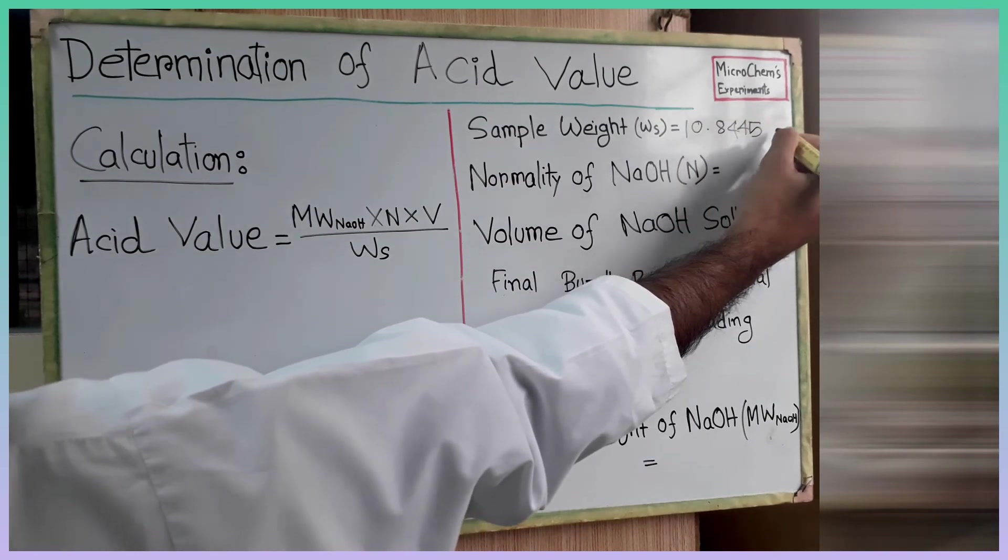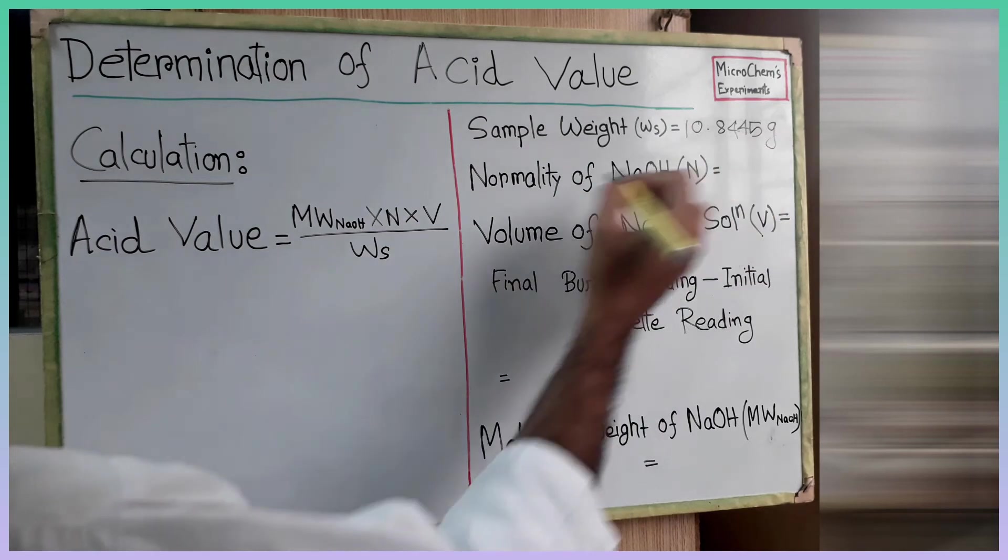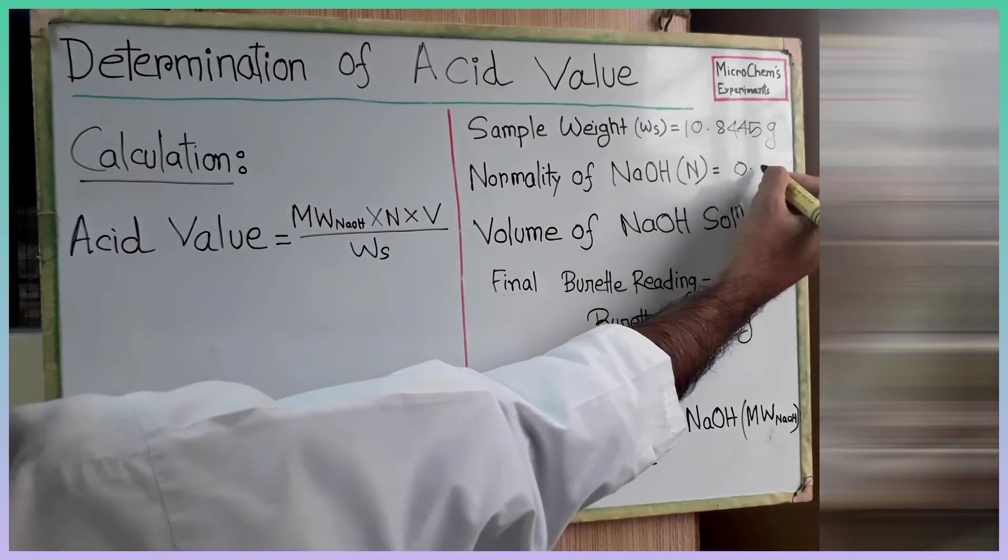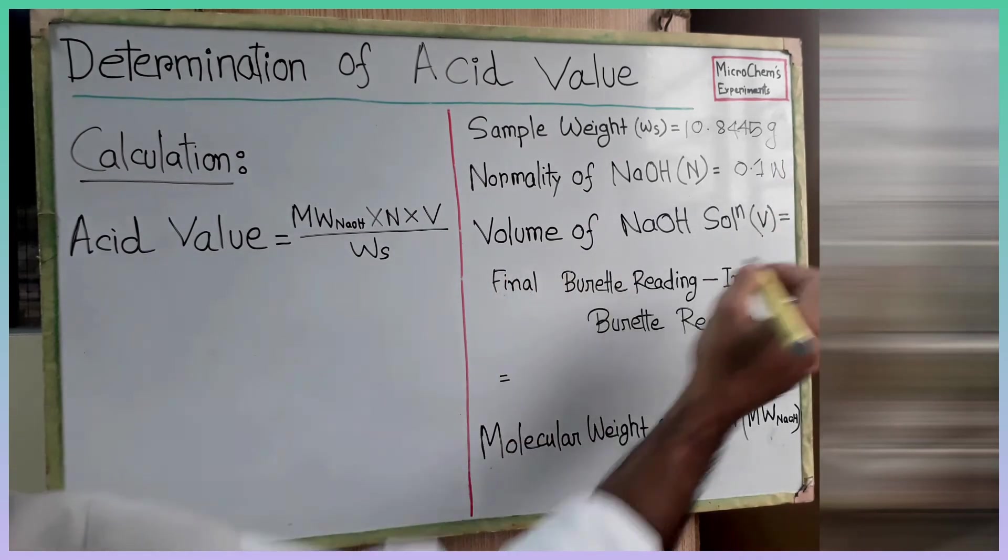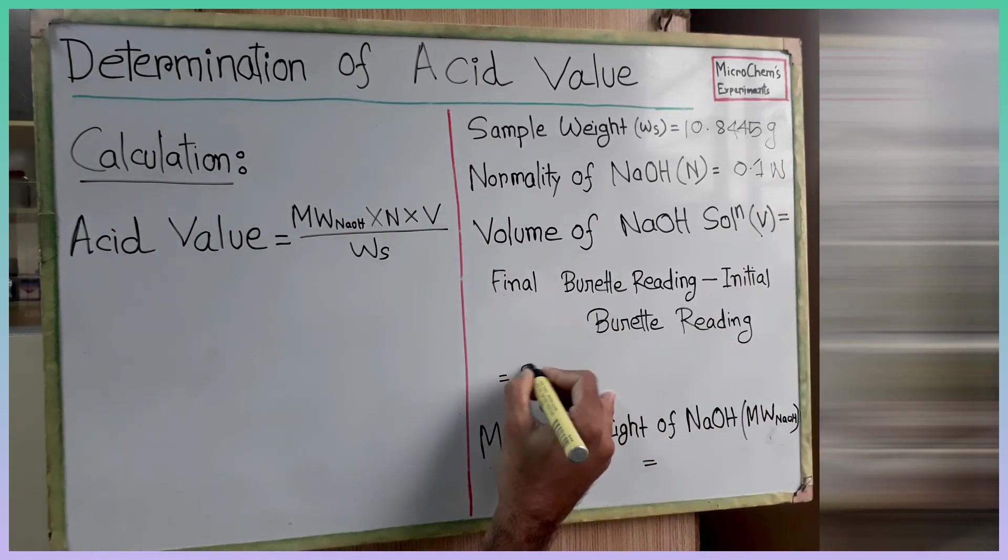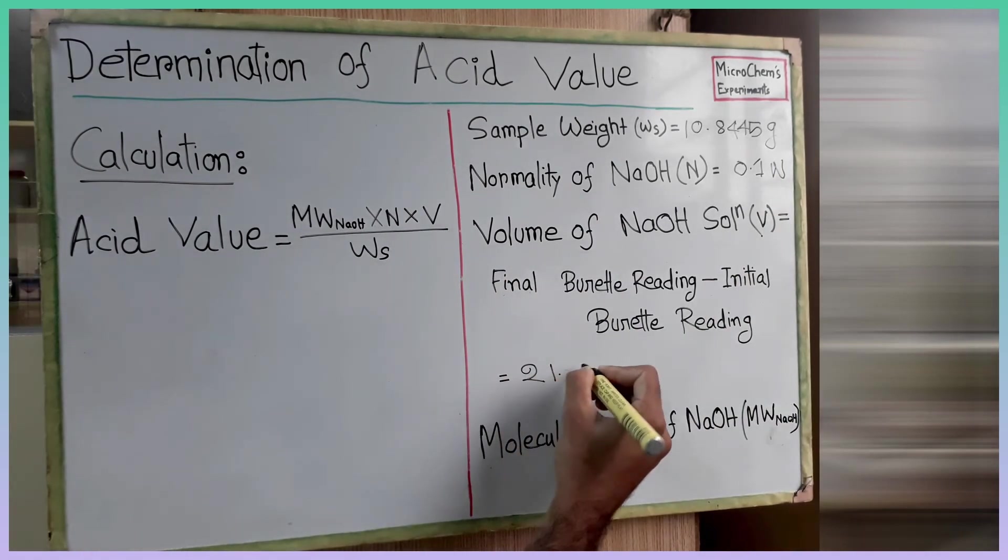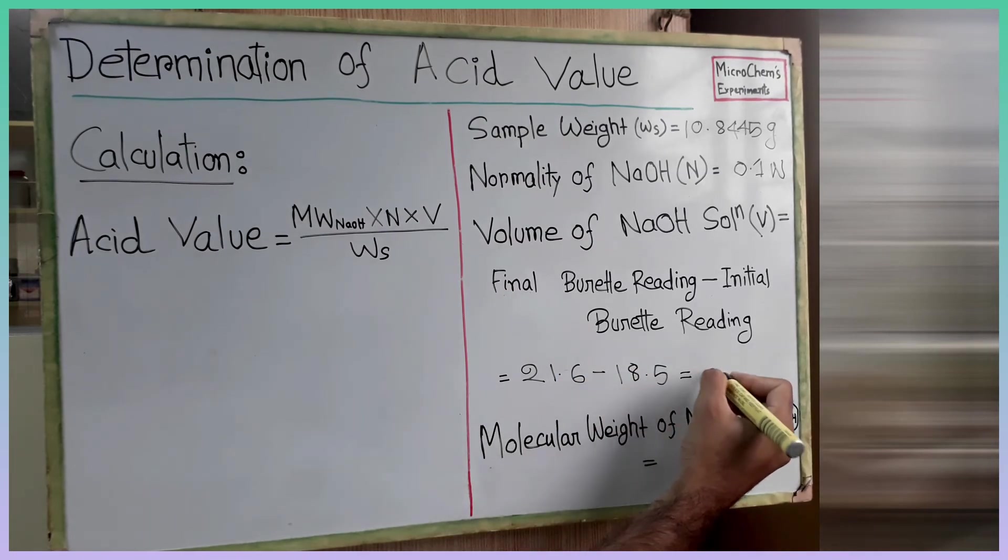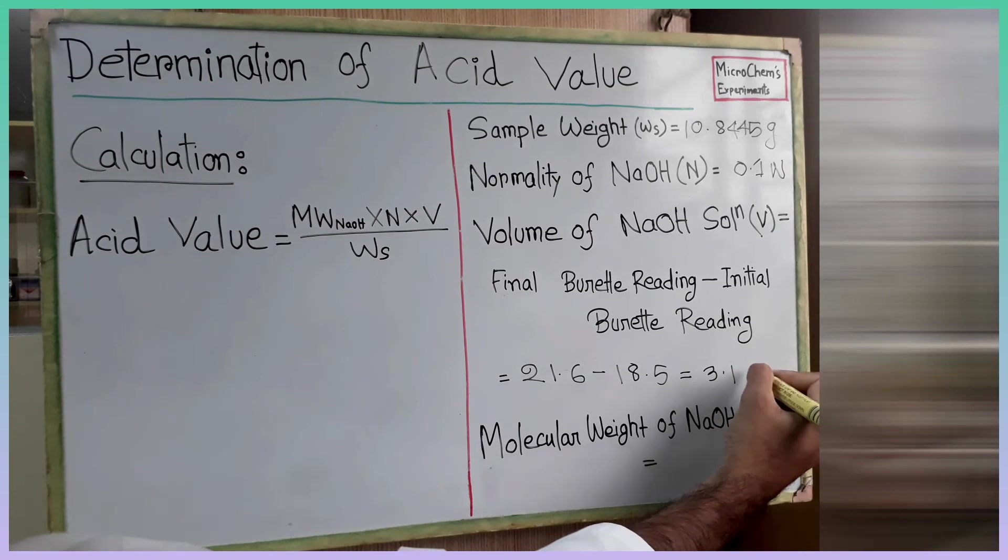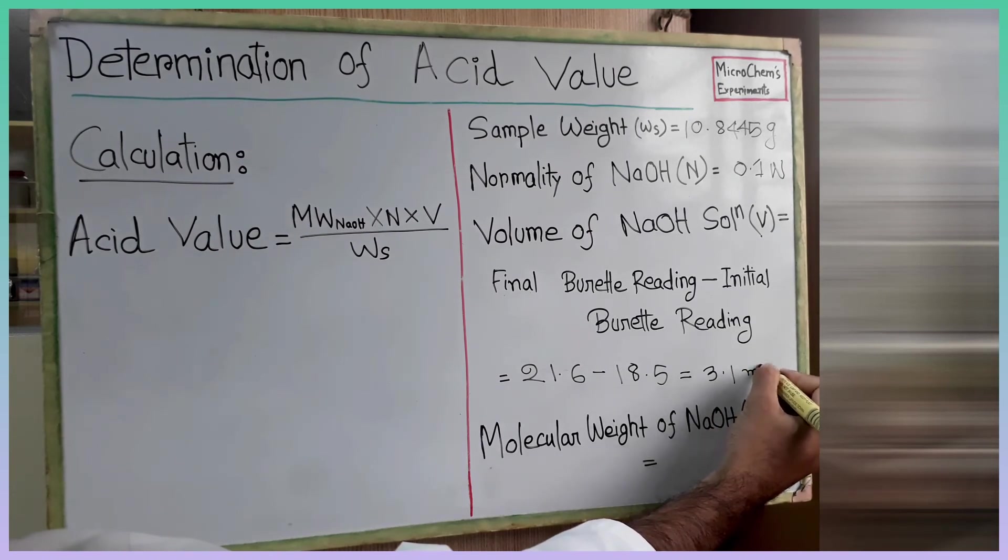Sample weight Ws is 10.8445 grams. Normality of sodium hydroxide is 0.1. We can find the volume of 0.1 normal sodium hydroxide by subtracting the final burette reading from the initial reading, which is 3.1 ml.